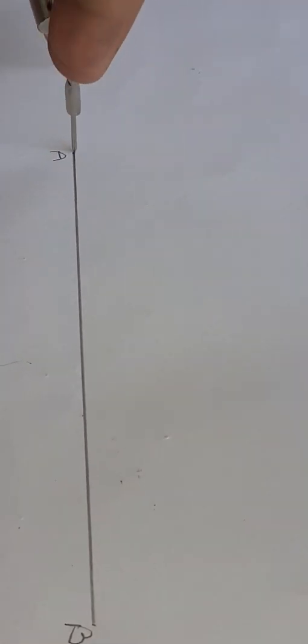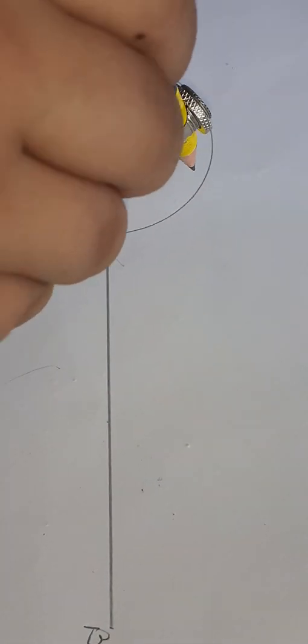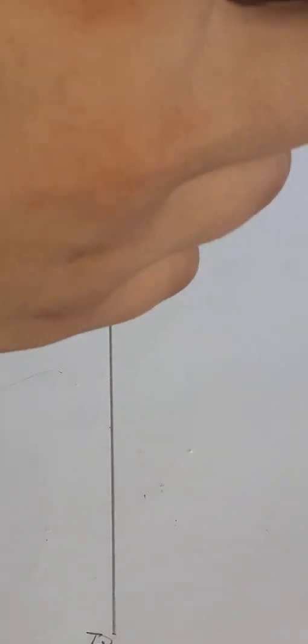Put your compass needle at A and draw an arc here. Name it C. Put your compass needle at C and draw an arc here. Name it D.